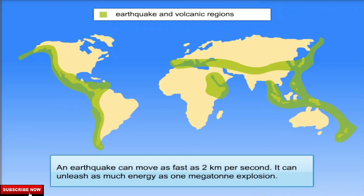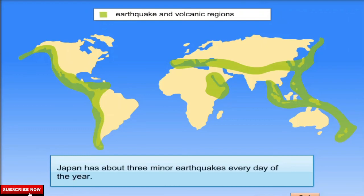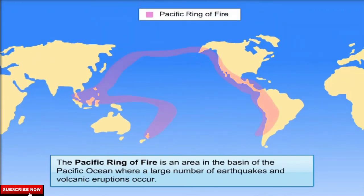An earthquake can move as fast as 2 kilometers per second. It can unleash as much energy as one megaton explosion. The Himalayan region and the areas surrounding it are prone to earthquakes. Japan has about three minor earthquakes every day of the year. The Pacific Ring of Fire is an area in the basin of the Pacific Ocean where a large number of earthquakes and volcanic eruptions occur.